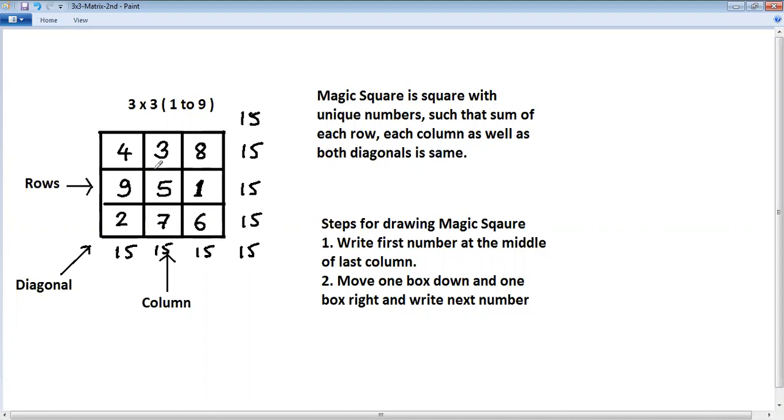So with the same rule, you can draw magic square of 3 by 3, 7 by 7 and so on. In our next session, we'll learn how to draw 5 by 5 magic square. Thank you.